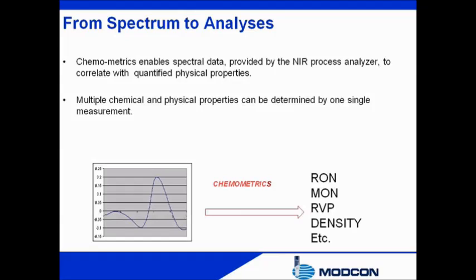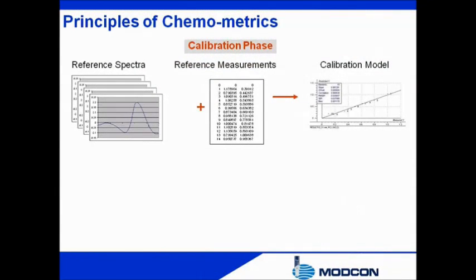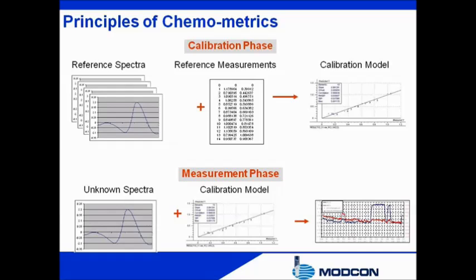Chemometrics applies this principle to quantify multiple physical properties from spectral data. The calculations of physical properties by chemometrics includes two different steps: a calibration phase and a measuring phase. In the calibration phase, spectra are recorded at the same moment when samples are withdrawn from the process stream for laboratory analysis. Assembling a reliable calibration curve is based on many samples with variances and quantified values of physical properties. In the measuring phase, the calibration curve is adapted to transform spectral data of an unknown composition into quantified physical properties. The reliability of the analytical prediction depends on the accuracy of the calibration model.